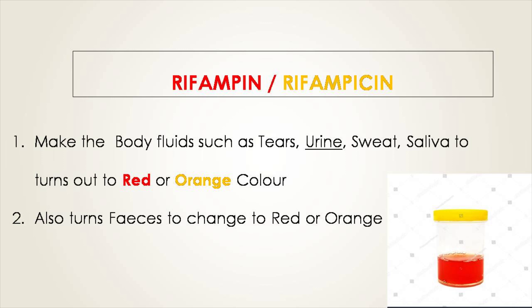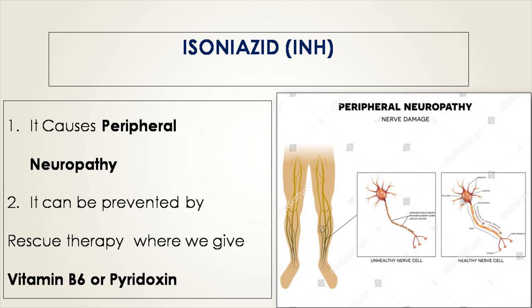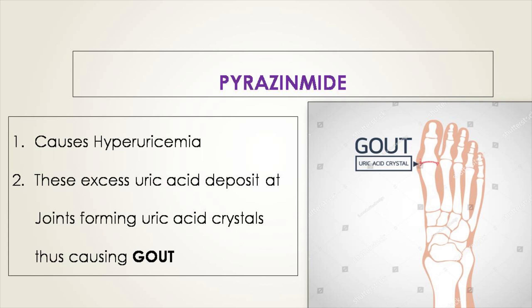Moving to the side effect of isoniazid: this drug causes peripheral neuropathy. To prevent this side effect, we give a rescue therapy using vitamin B6, also known as pyridoxine.